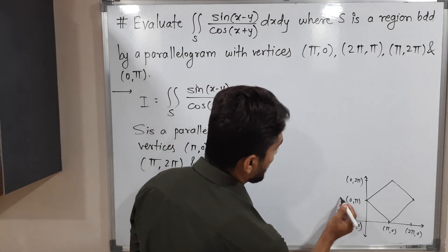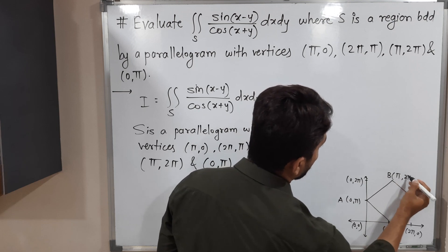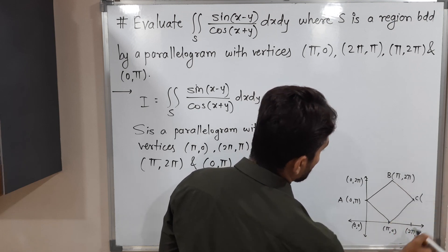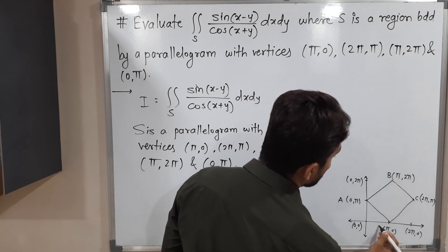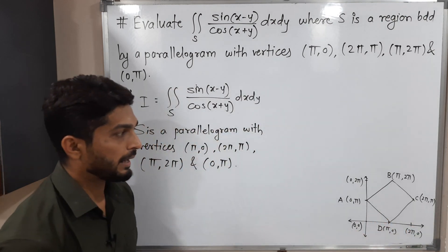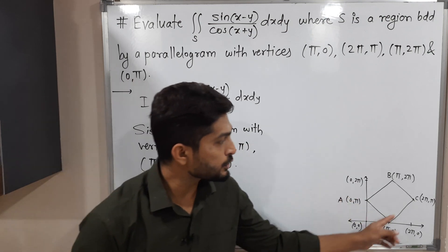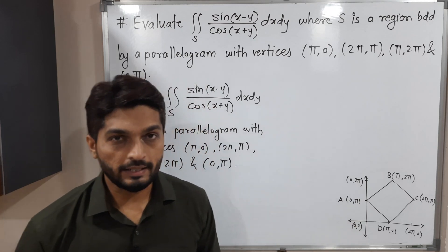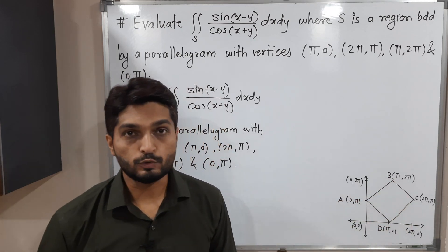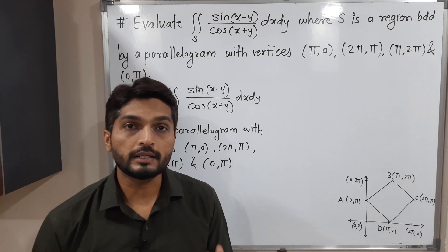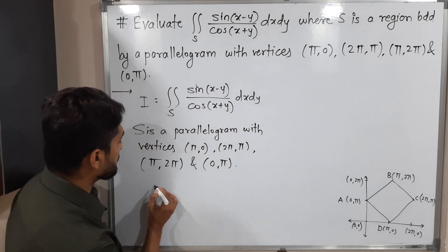Let us call the vertices A, B with coordinate pi comma 2pi, C at 2pi comma pi, and D. This is the parallelogram we have. It is very important to know the equations of these four lines: line AD, line AB, line BC, and line DC. So our first task is to find the equations of these lines.